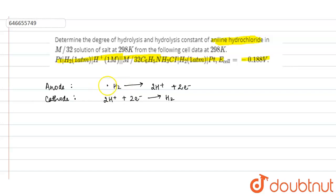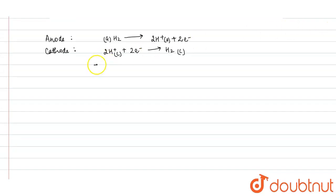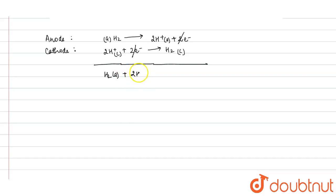If we write the net cell reaction, it will be: H₂ of anode plus 2H⁺ of cathode gives H₂ of cathode plus 2H⁺ of anode.